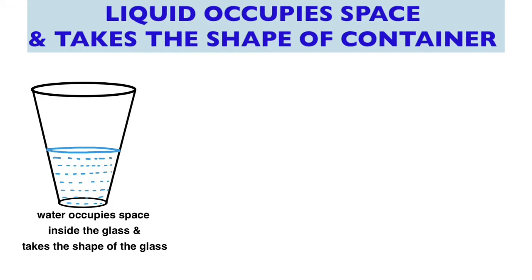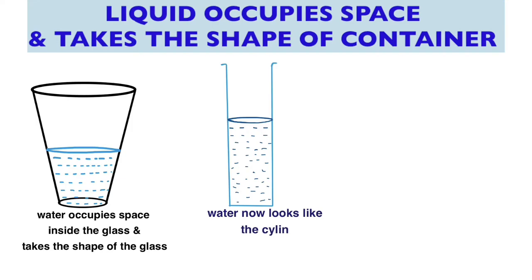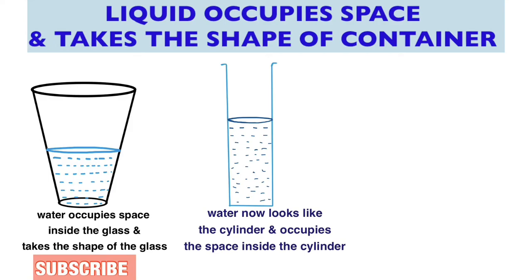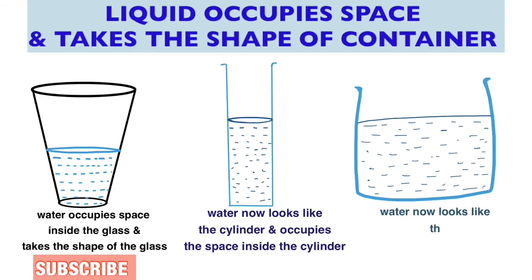Now if we pour this water into the cylinder it will change its shape and also become cylindrical too and will occupy the space inside the cylinder. Again if we pour this water in a tumbler now it will look like the shape of the tumbler.